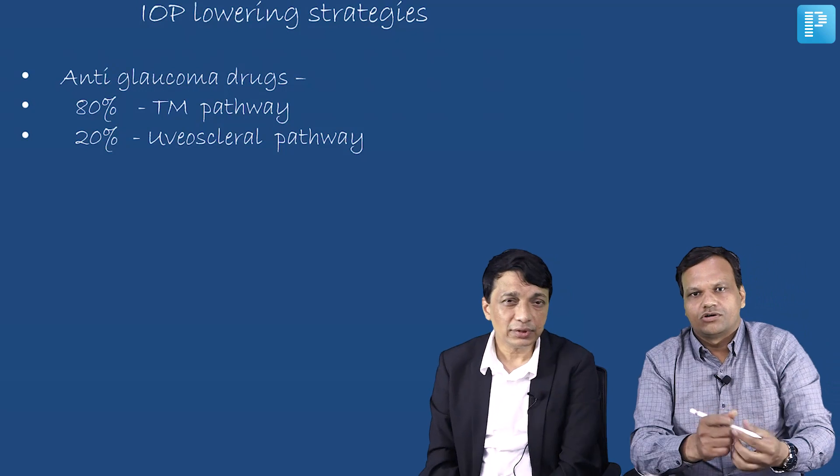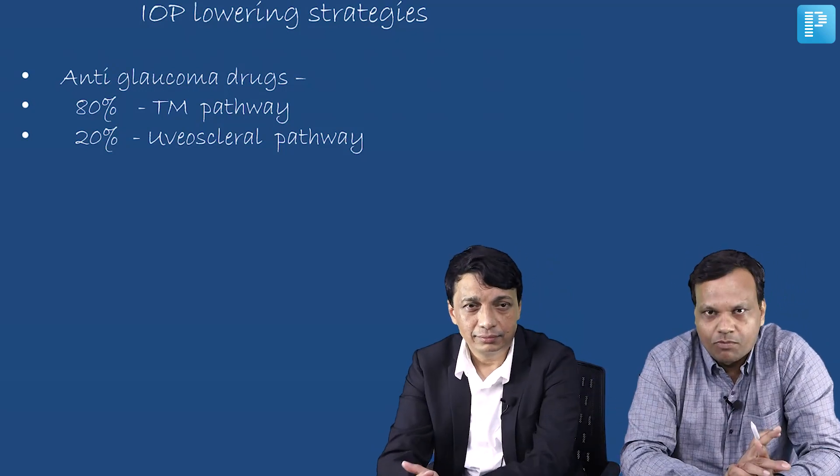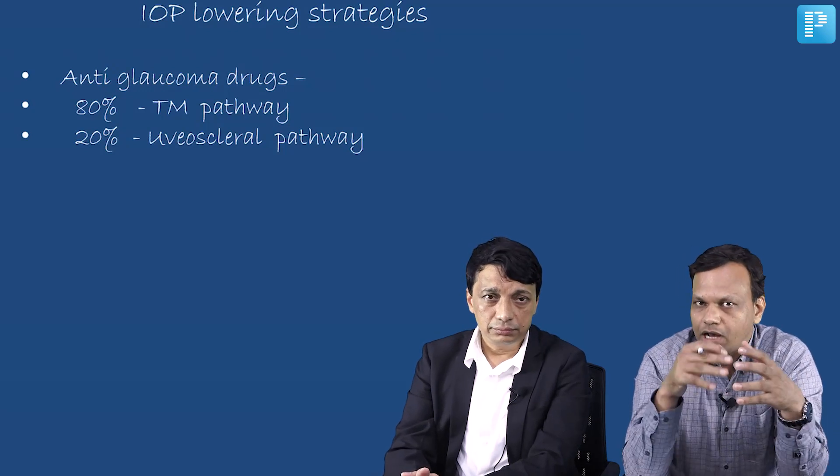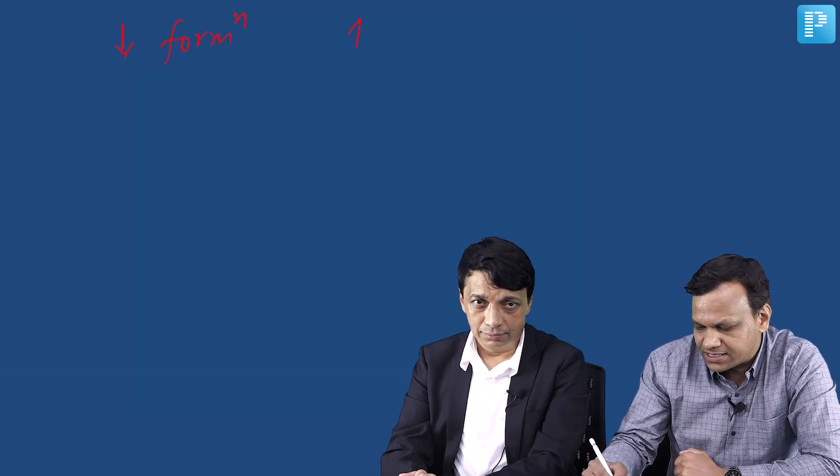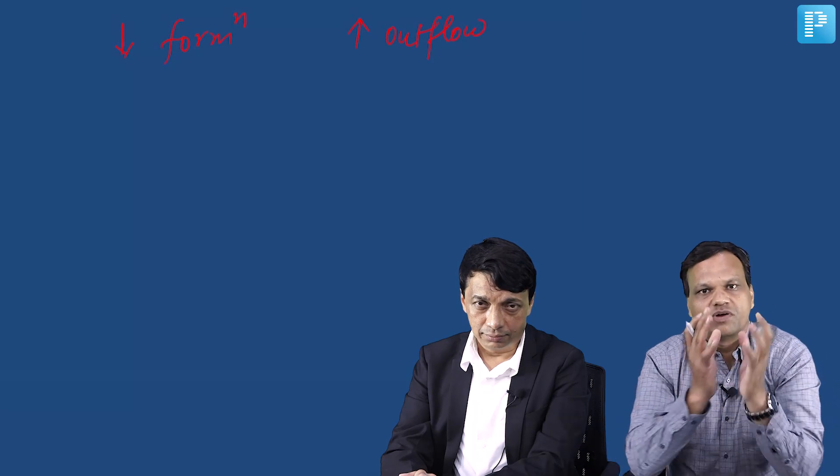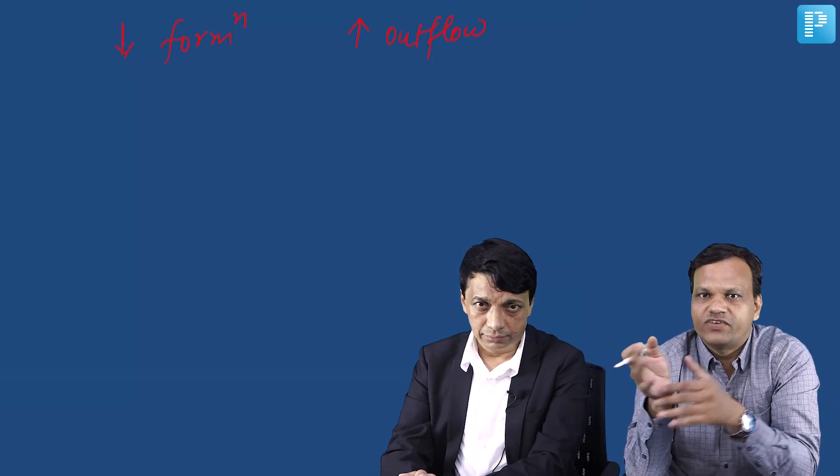Thank you, Dr. Shaswat. Dr. Shaswat has beautifully explained how the patient presents with glaucoma and what our aims are. I will be talking about the drugs. Basically, the drugs aim to lower the intraocular pressure. But first, we need to know why intraocular pressure is high. The reason for increased intraocular pressure is there is more aqueous humor, and if it is more, pressure increases. So if we decrease aqueous humor, pressure will decrease. We can either decrease the formation of aqueous humor or increase its outflow.